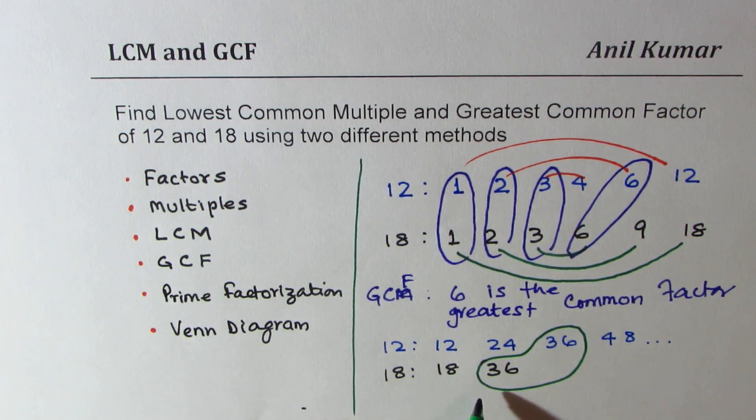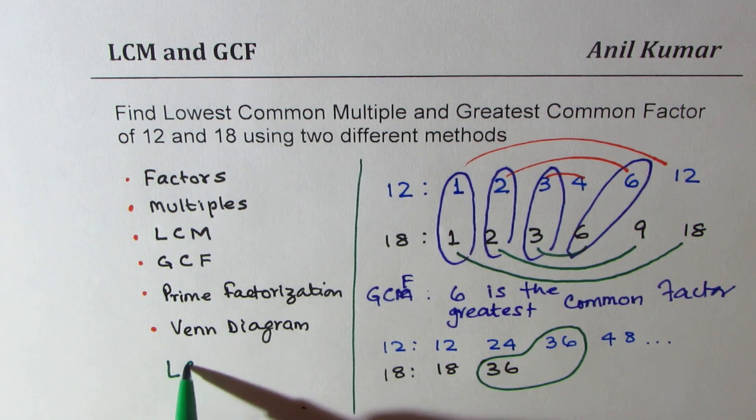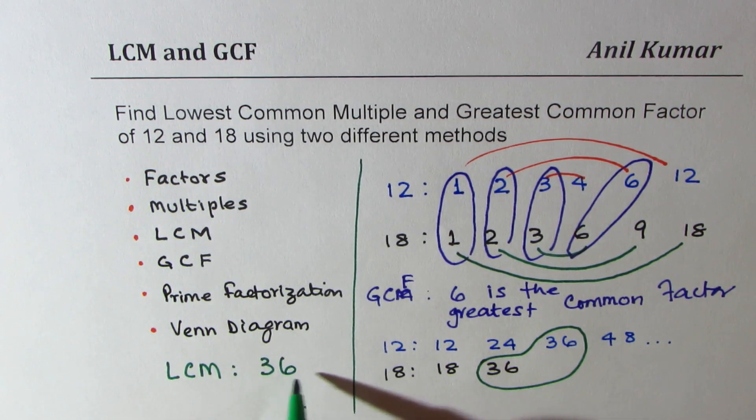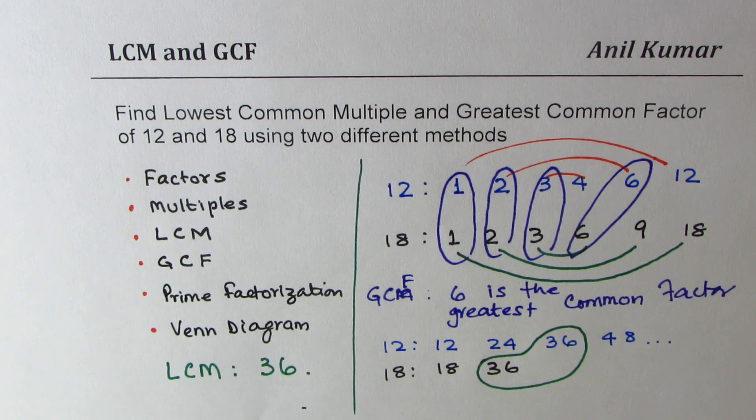What do you notice here is that 36 is common. From here we know that the lowest common multiple, the lowest common is 36, so we get our LCM as 36.